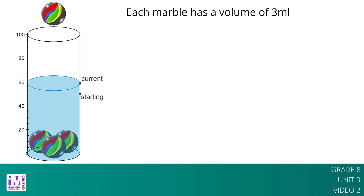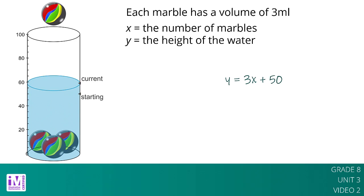Let's say that x is the number of marbles and y is the height of the water. Reasoning this way, we can calculate that the height y of the water for x marbles is y equals 3x plus 50. Any linear relationships can be expressed in the form y equals mx plus b using just the rate of change, m, and the initial amount, b.